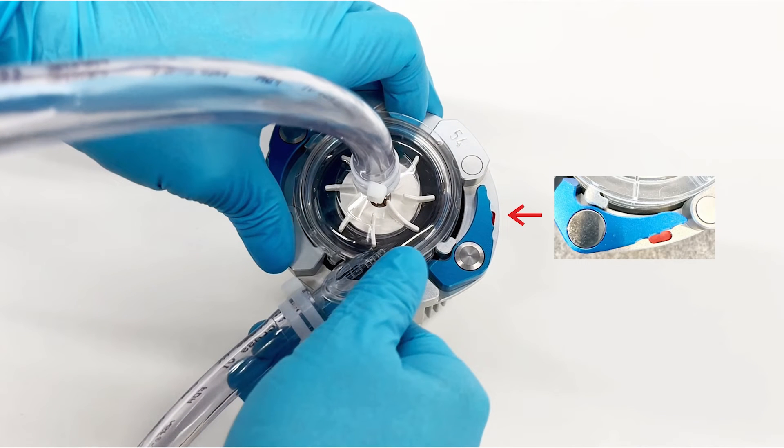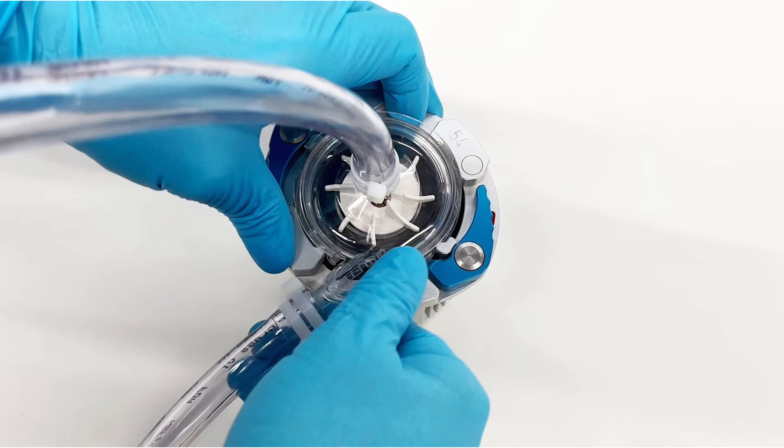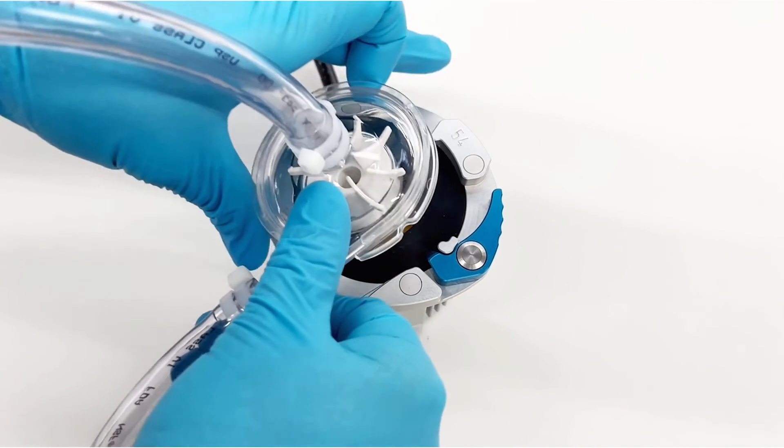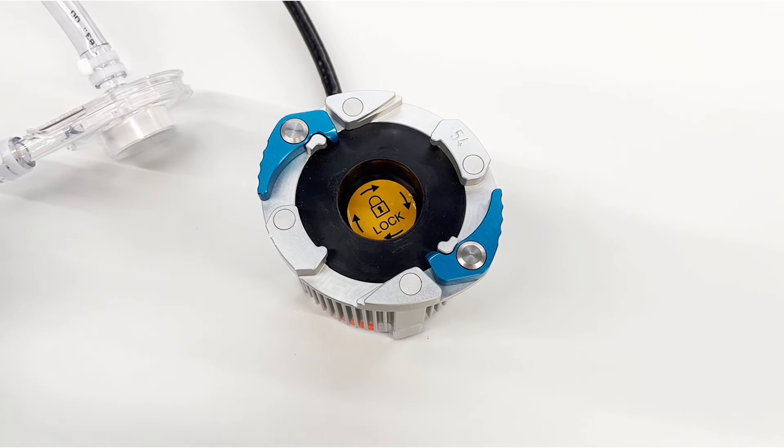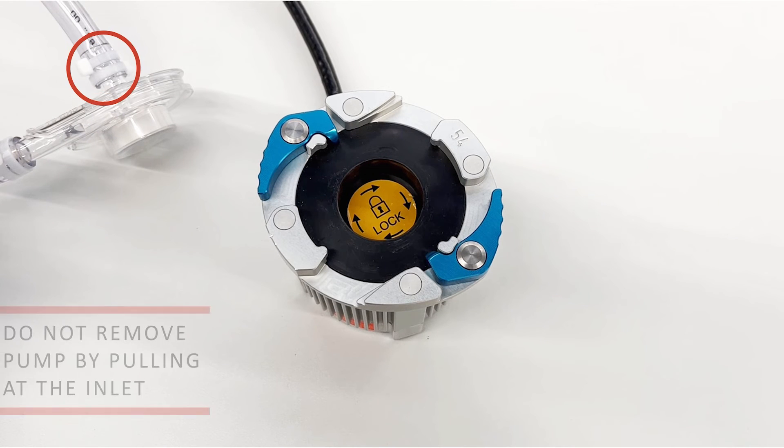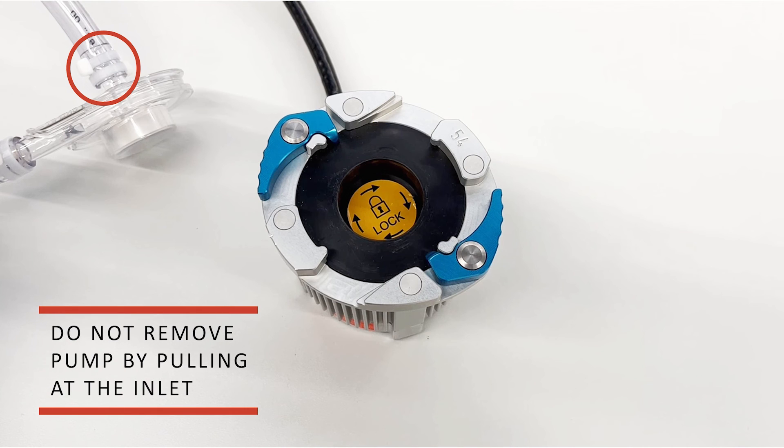A visible red mark will indicate that the pump is no longer locked into the motor. Remove the pump from the motor by grasping the body with one or two hands and lifting straight up and away from the motor. Note: pulling from the pump inlet is not recommended.